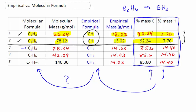And it turns out that the ratio of the molecular mass to the empirical mass tells us what we need to multiply our empirical formula by to get the molecular formula.